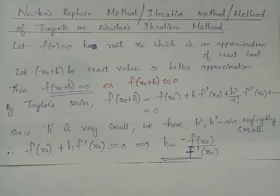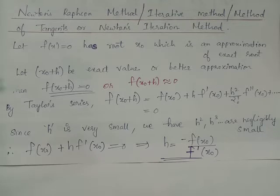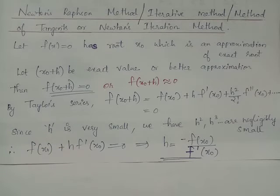Hence the Taylor series expansion simplifies to f(x0) + h·f'(x0). Since f(x0 + h) is equal to 0 or approximately equal to 0, we have f(x0) + h·f'(x0) = 0. From this expression we get h = -f(x0) / f'(x0).